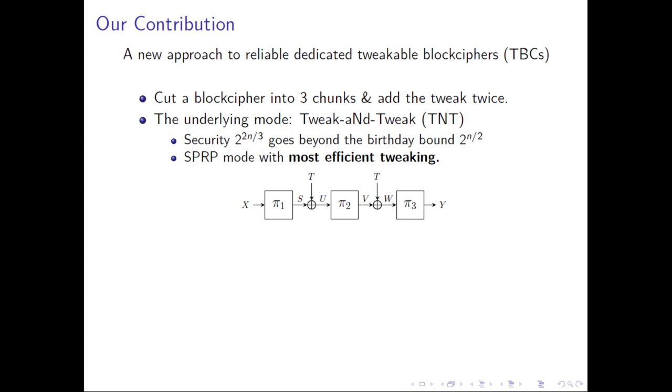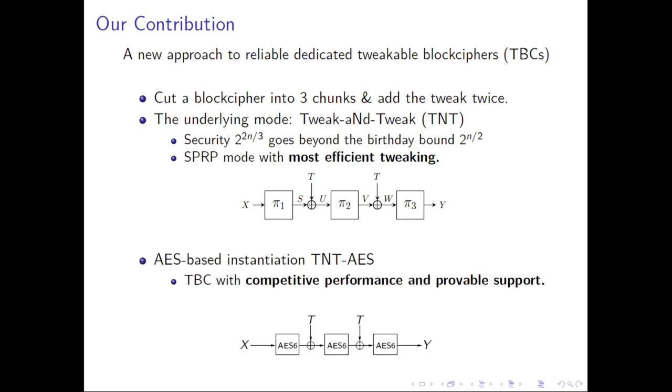Note there is no tweak schedule function here. We just insert the original tweak, so it will be efficient. The method can be viewed as an iterative mode with three computations pi1, pi2, and pi3. We call this mode Tweak-aNd-Tweak because it can be seen as we tweak the computations twice. The mode is, as we prove, beyond birthday bound secure up to 2 to 2n divided by 3 queries. This might be the SPRP mode with the most efficient tweaking method because there is no tweak schedule function as we mentioned before.